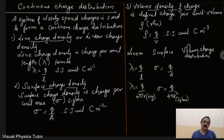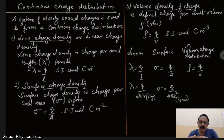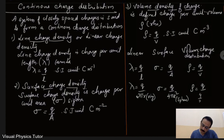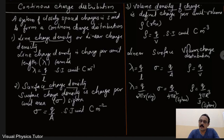For volume charge density: rho equals Q divided by V. For a sphere, rho equals Q divided by (4/3)πr³, since the volume of a sphere is (4/3)πr³. Hope you have understood this video — thanks for watching.